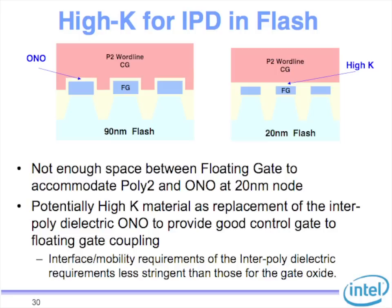But now scale it down to a 20 nanometer flash. I have 12 nanometers of ONO on each side. I don't have space to put a control gate in addition to the ONO there. So essentially I have just run out of space to put that dielectric there. I cannot not have a wrap because then that really screws up my gate coupling ratio. As a result, we are in a very tight box — there isn't enough space between the floating gates to actually accommodate the poly 2 and the ONO at a 20 nanometer node.